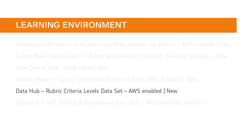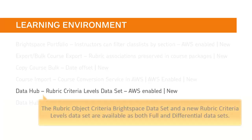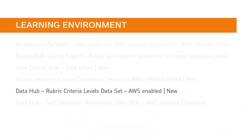Some columns have been removed from the Rubric Object Criteria Brightspace dataset and a new Rubric Criteria Levels dataset has been created. The two sets cover all of the columns in the original Rubric Criteria Object dataset, and each new dataset has its own primary key columns. These datasets are available as both full and differential datasets.